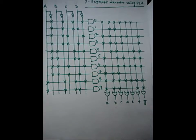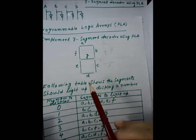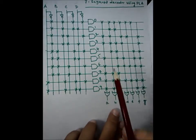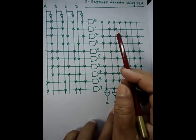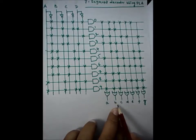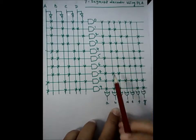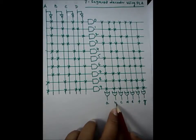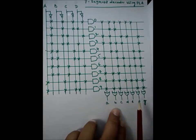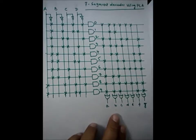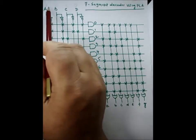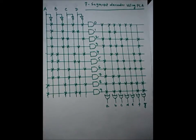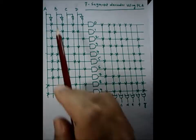Similarly, if we want to display digit one, only B and C have to display. You can see that B is connected to one input of the OR gate, and C is connected to another input of the OR gate. Therefore B and C will glow and all remaining segments will remain off. In this way we can implement any digit based on the input provided.